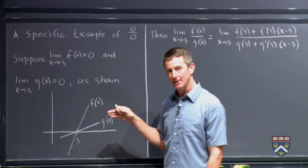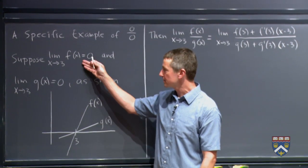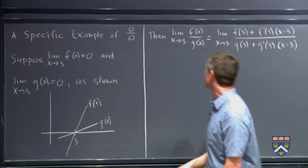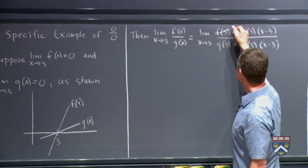So this limit has to equal f(3), meaning f(3) is 0 and so is g(3). So both of these quantities are simply 0.